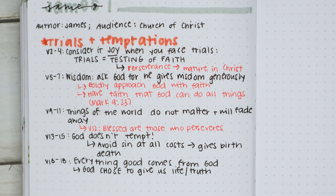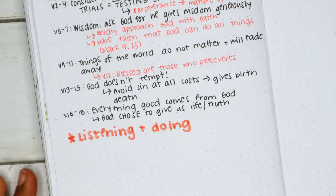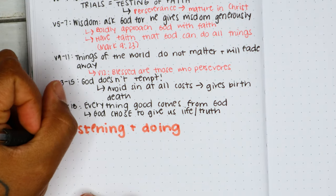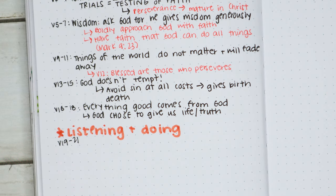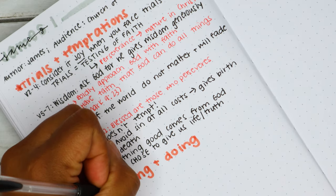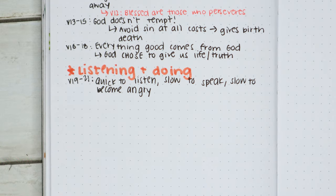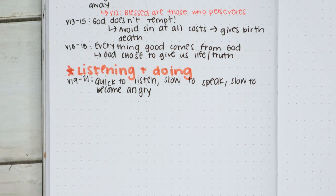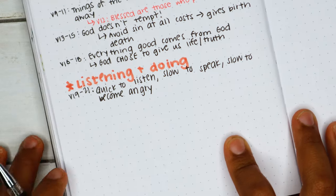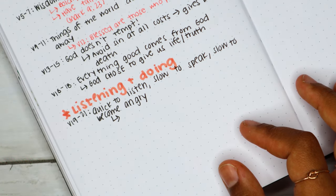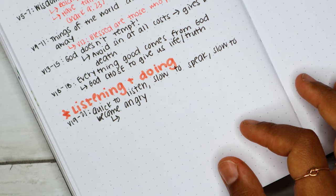That was 'Trials and Temptations,' and now we move on to 'Listening and Doing,' which is what my Bible calls this section. This is vital, and it's something I see a lot — and honestly, it's something I do sometimes. The key takeaway: be quick to listen, slow to speak, and slow to become angry. Humbly accept the word planted in you, which can save you. Humility brings about acceptance of God's truth, and humility means recognizing that we are not always right.